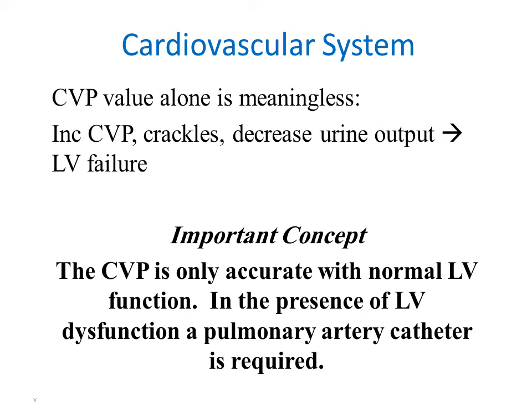An important concept: central venous pressure is only accurate when left ventricular function is normal. To confirm that the central venous pressure reading is valid, the left side of the heart must be functioning well without problems. However, in the presence of left ventricular dysfunction, the central venous pressure reading is inaccurate.